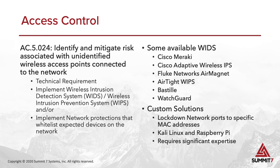Let's jump into access control. With access control, we have AC.5.024: identify and mitigate risk associated with unidentified wireless access points connecting to the network. This one brings new requirements to the table. We have to have what's known as a wireless intrusion detection system or a wireless intrusion prevention system. There's some conversation that this goes beyond Wi-Fi and is actually talking about cellular as well, with cellular intrusion detection and prevention systems that can scan for cellular hotspots. What we know for certain is it covers wireless access points connecting to your local area network — we have to monitor for those and put in network protections. There are lots of wireless intrusion detection and prevention systems out there.